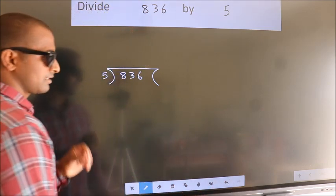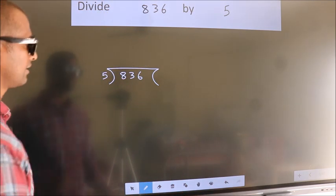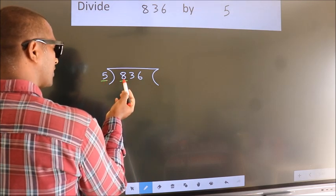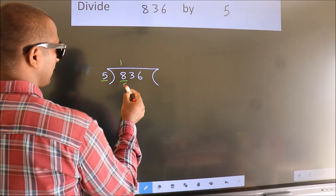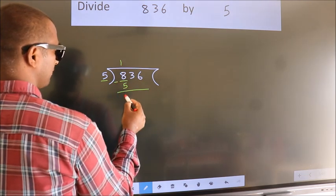This is your step 1. Next, here we have 8, here 5. A number close to 8 in the 5 table is 5 once 5. Now we should subtract. We get 3.